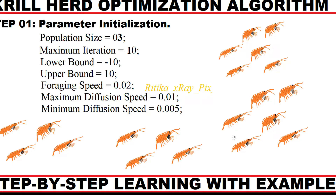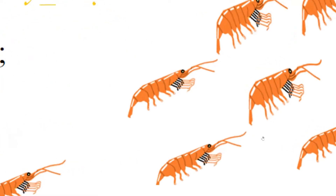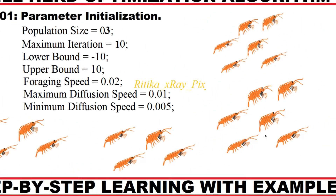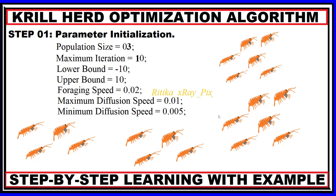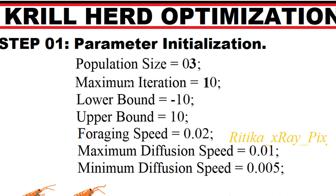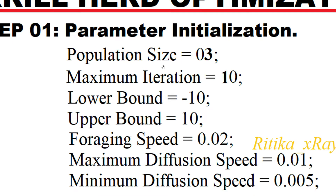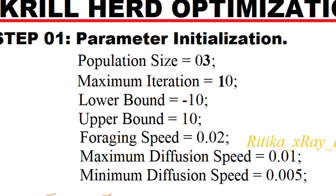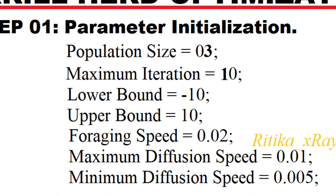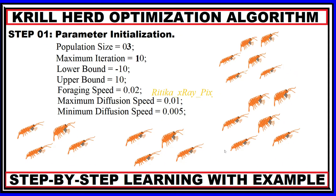The Krill Herd optimization algorithm is a bio-inspired metaheuristic optimization algorithm inspired by the herding behavior of krill. The first step is the parameter initialization phase: population size is 3 krills, maximum number of iterations is 10, lower bound is -10, upper bound is 10, and the minimum-maximum diffusion speed is 0.02.